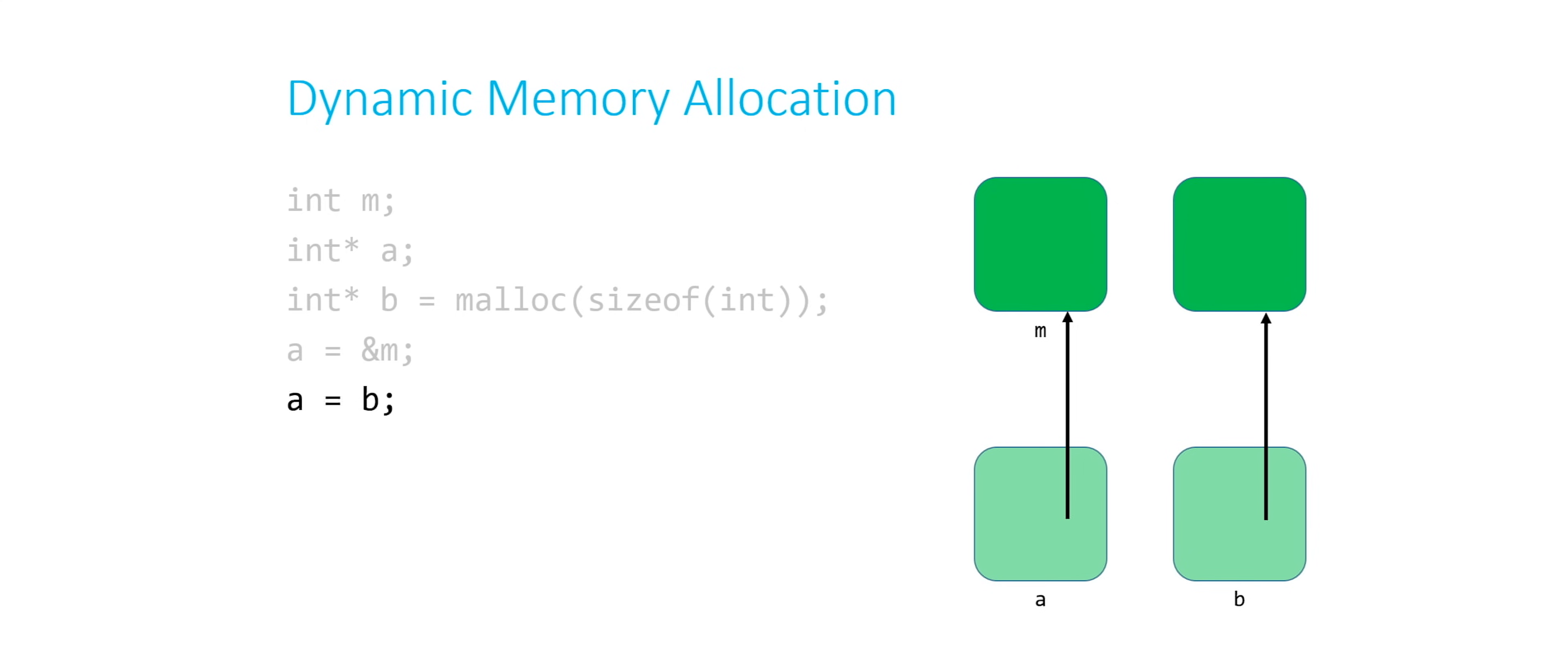What I'm saying is that a and b are now going to point to the same location. In particular, a is going to point where b currently points. And so instead of pointing to m, a is now going to point over here to this dynamically allocated block that I can currently only reference.